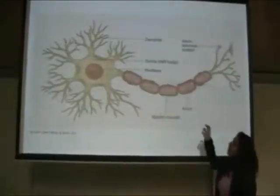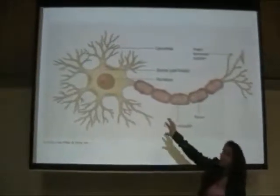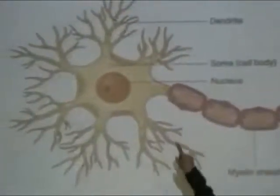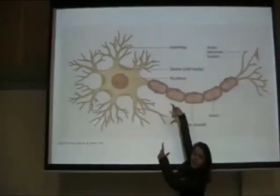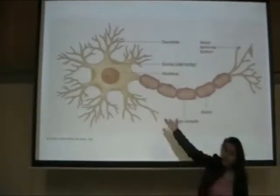This is the neuron. We have the cell body over here which is called the soma, this part. And in the midst of it, the very big brown thing—it's called the nucleus.